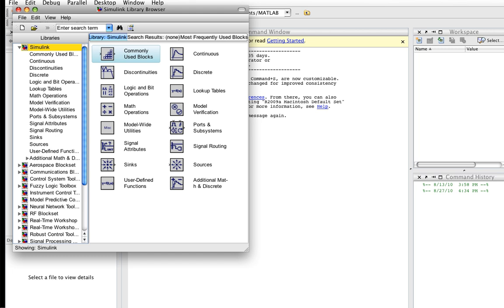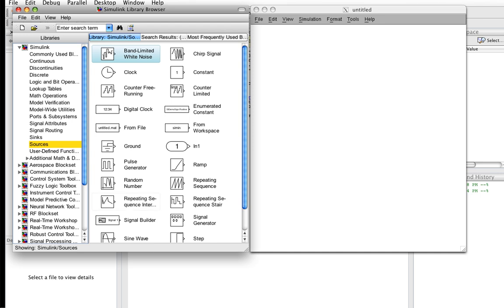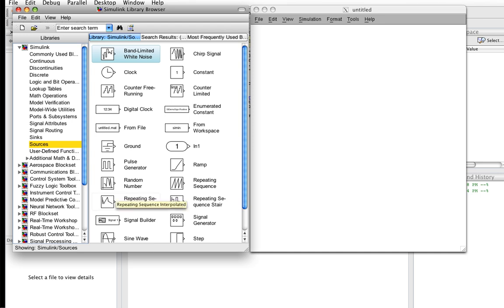So now I have my Simulink window. I have my library browser that gives me access to all the blocks that I want to use. Let's suppose that for the source here, we're going to use a step function because step functions are fun. So the step function is actually going to be our input x.